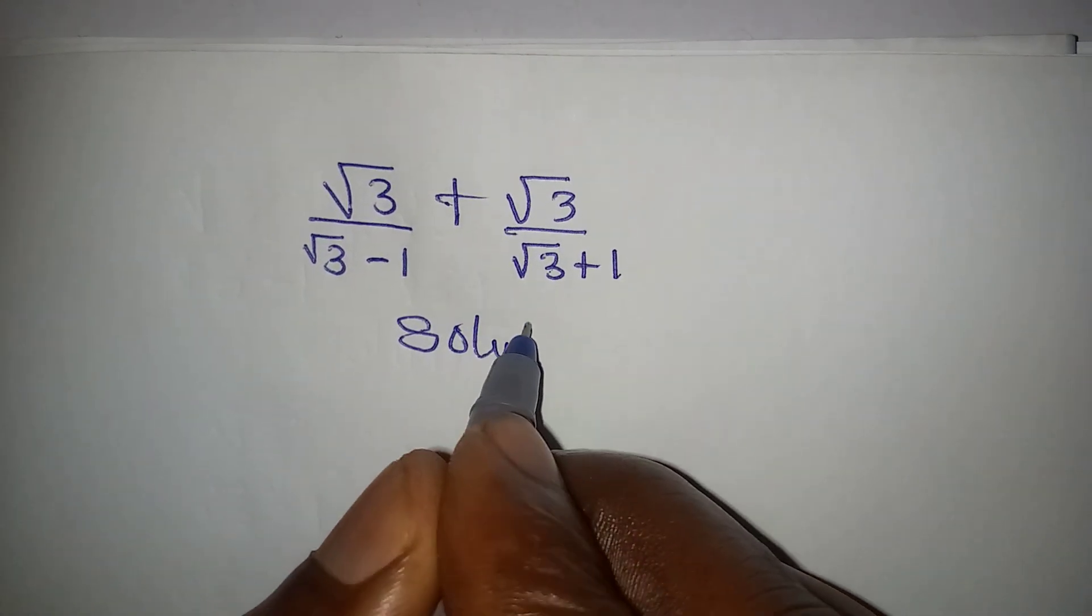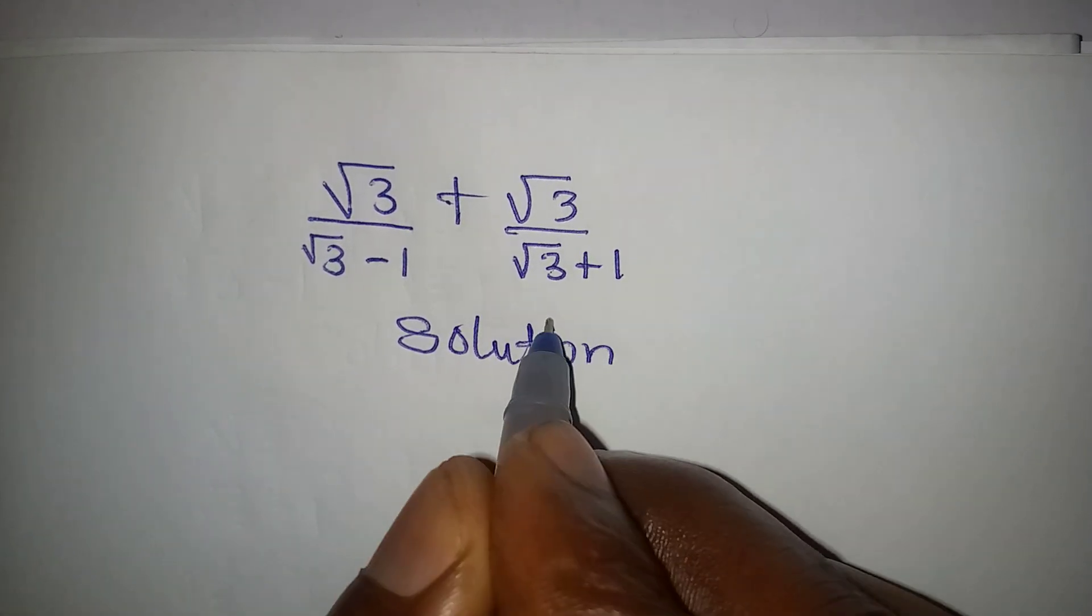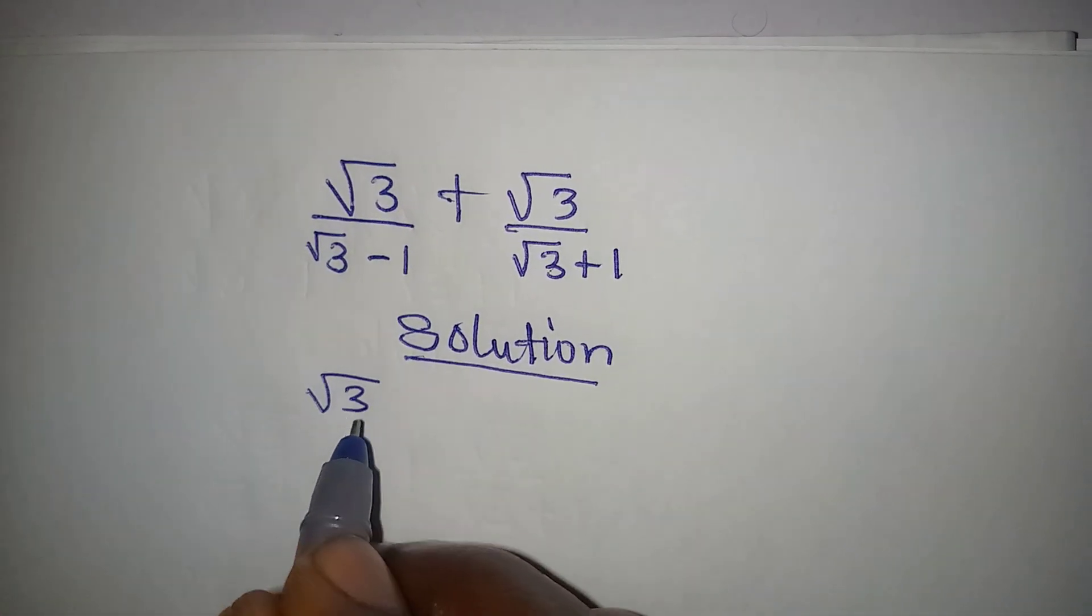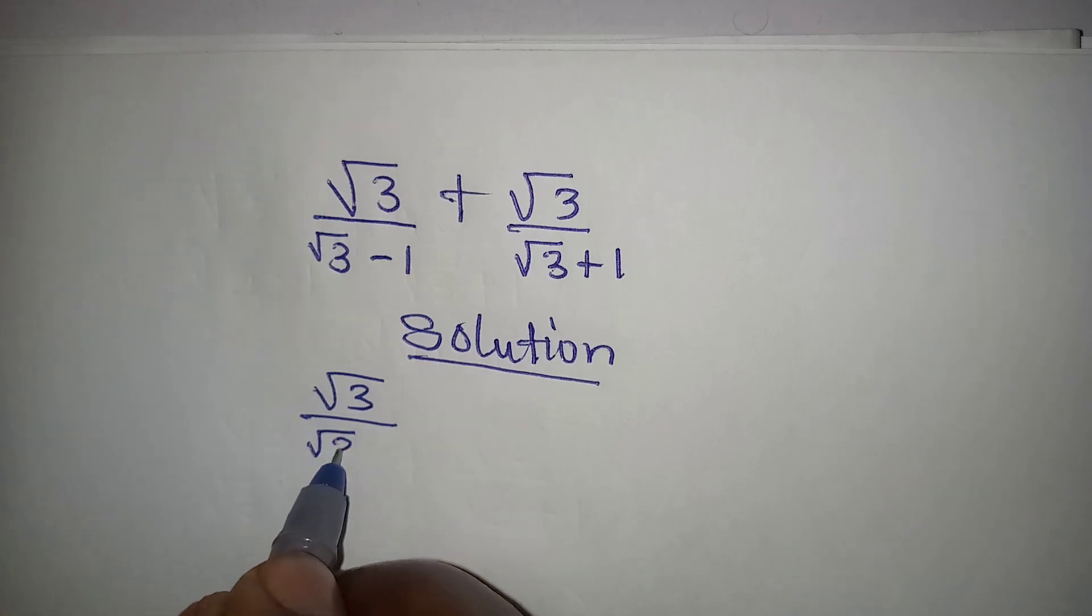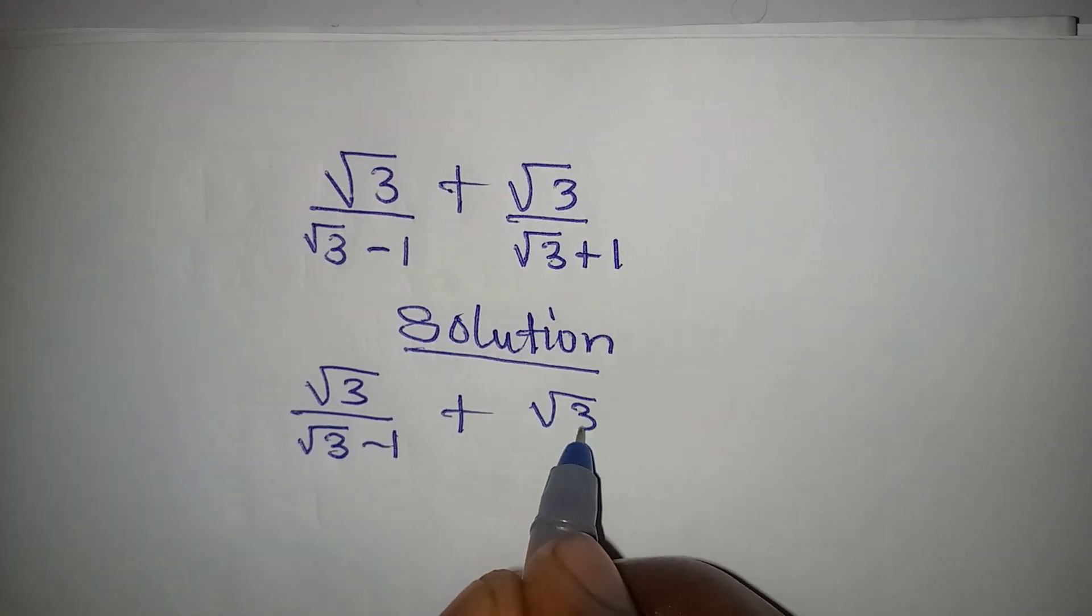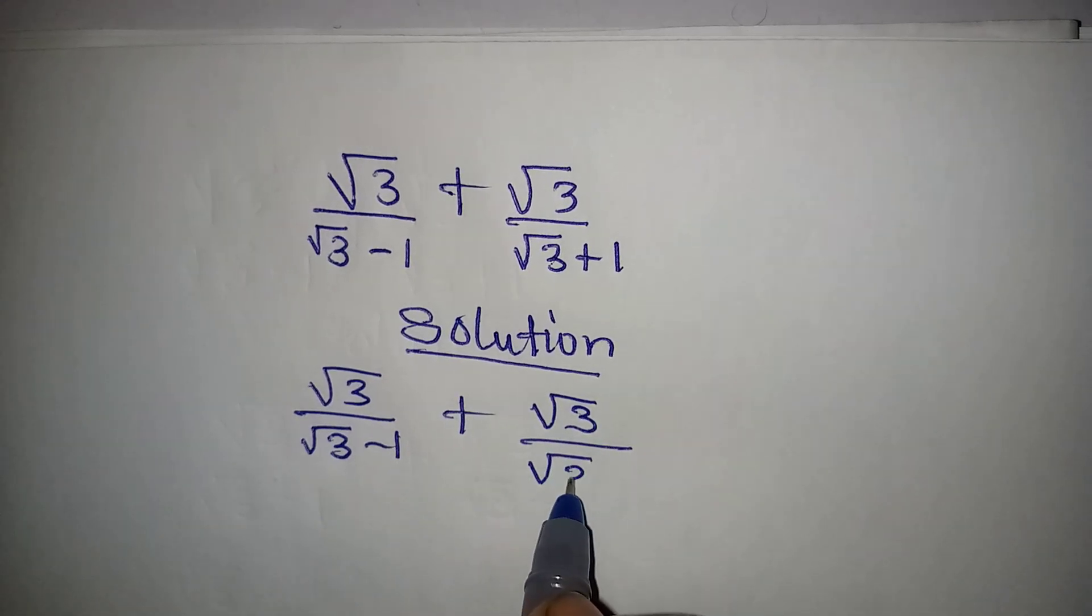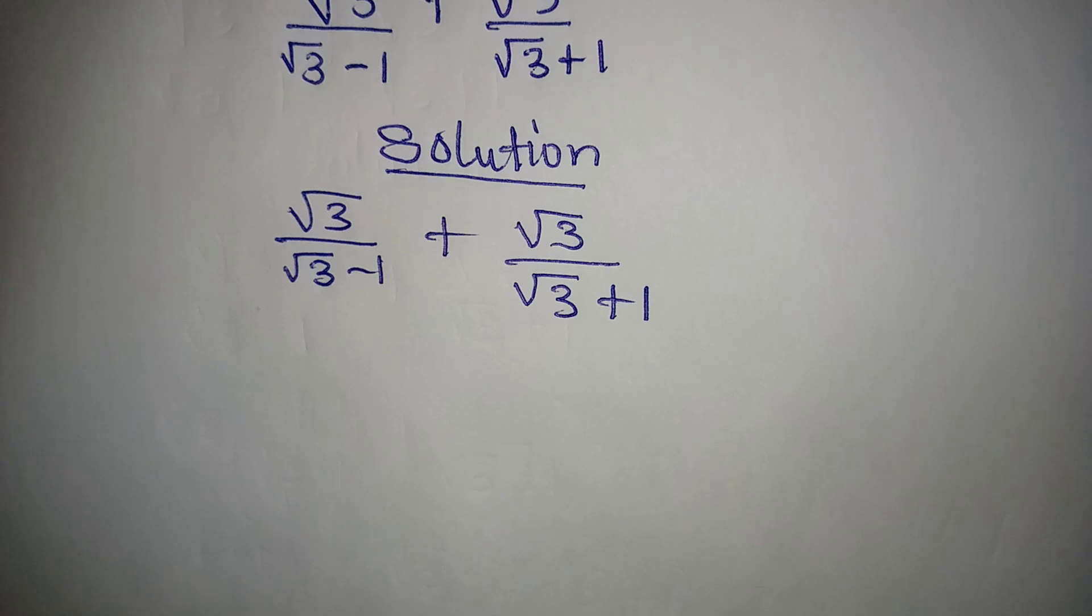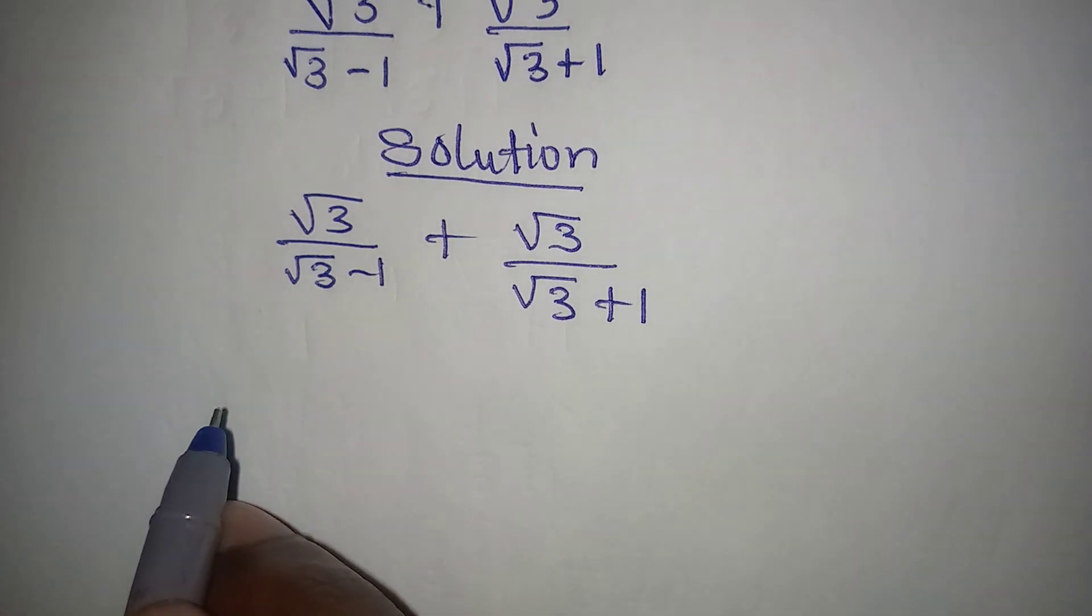Hello everyone, let us deal with this problem quickly. We have square root of 3 over square root of 3 minus 1 plus square root of 3 over square root of 3 plus 1. This is simple.